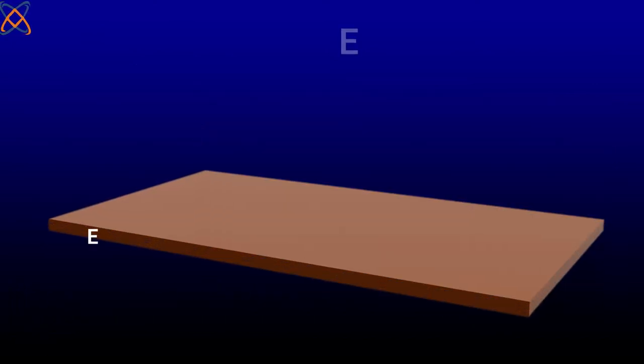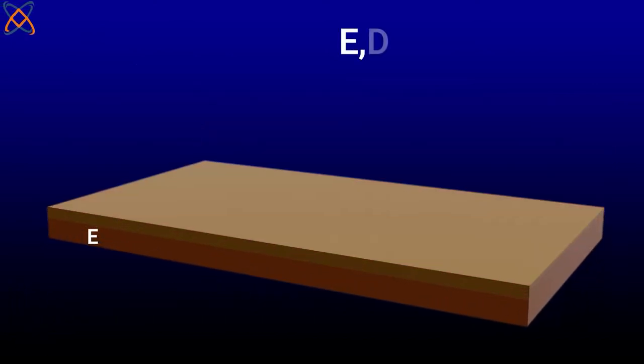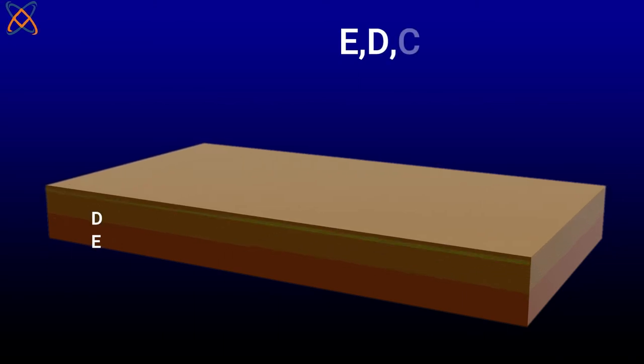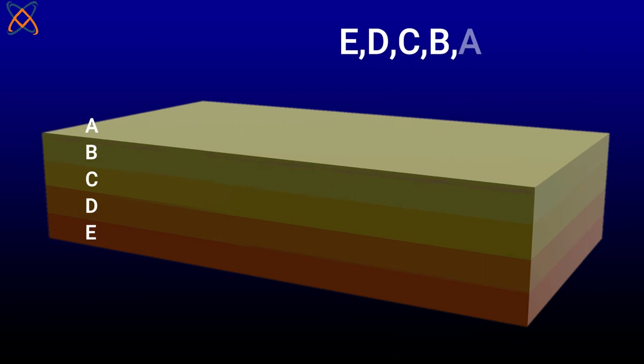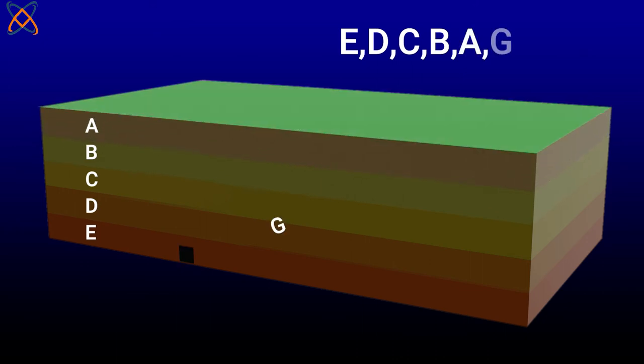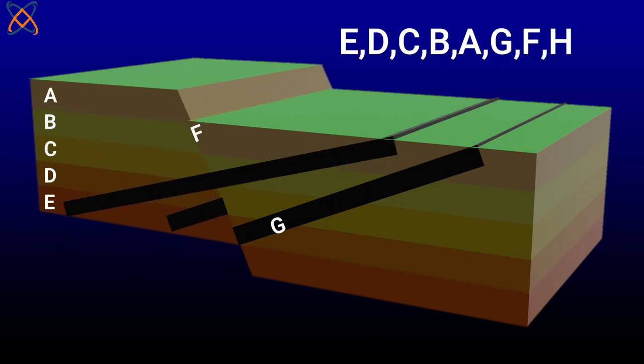Now to the solution. E was deposited first, followed by D, then C, B, and A was deposited last. Intrusion G cut through the rock, and then the rocks became faulted, and a new intrusion H cut through the rock. So the correct answer should be E, D, C, B, A, G, F, H. If you get that, let me give you a hand.